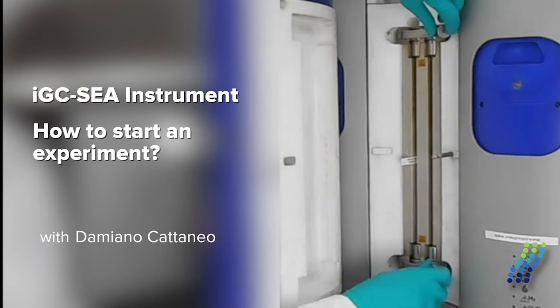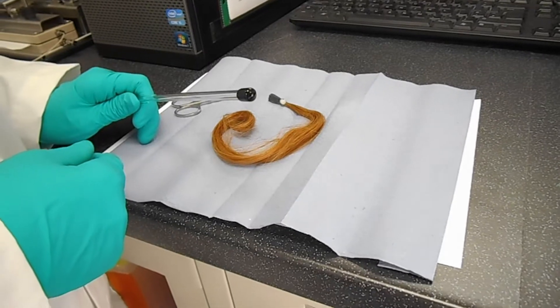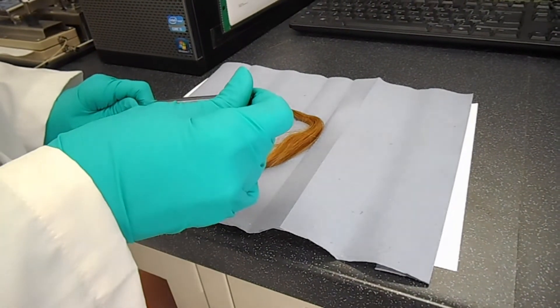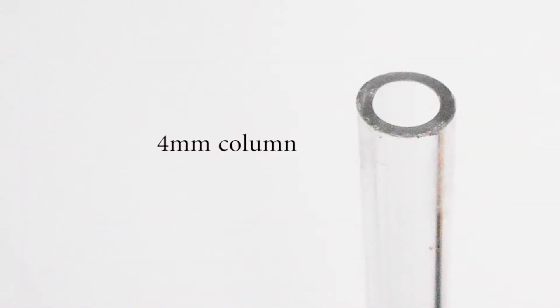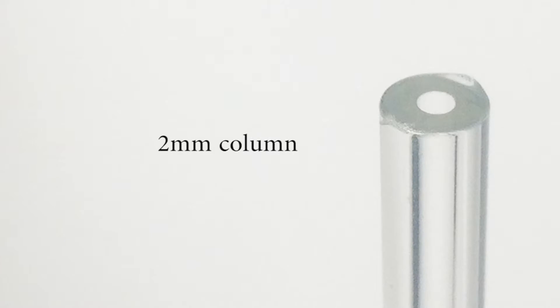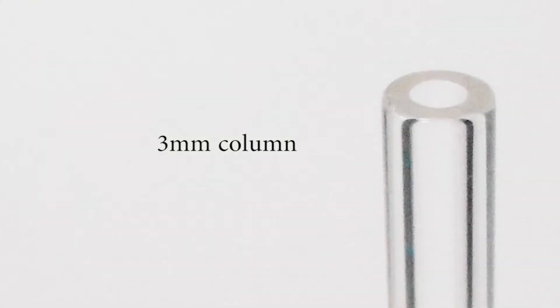So what we are doing today as an experiment is run the characterization of a hair sample. We are using long hair fiber and in this case we are using a four millimeter column. We also provide two and three millimeter columns for different types of samples but usually for hair samples the four millimeter column is ideal.